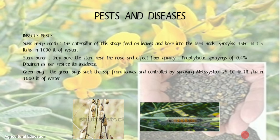Insect Pests: Sunhemp Moth — the caterpillar feeds on leaves and bores into seed pods; controlled by spraying 35% emulsion concentrate at 1.5 liters per hectare in 1000 liters of water. Stem Borer — bores the stem near the node and affects fiber quality; controlled by prophylactic spraying of 0.4% Diazonin. Jassid (Greenbug) — sucks sap from leaves; controlled by spraying Metasystox 25 emulsion concentrate at 1 liter per hectare in 1000 liters of water.